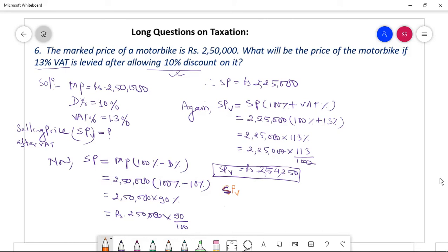SPV equal to MP times (100 percent minus D percent) times (100 percent plus VAT percent). If we apply this directly we will get the answer or not, let me check, dear students.